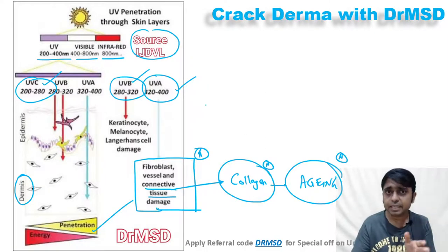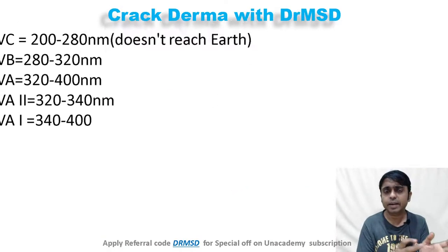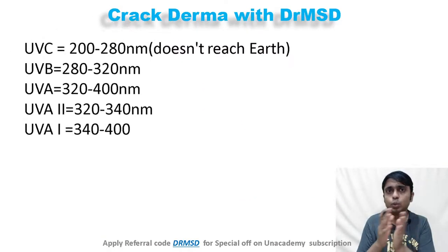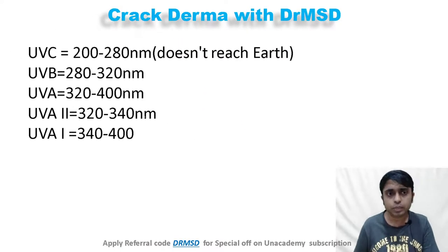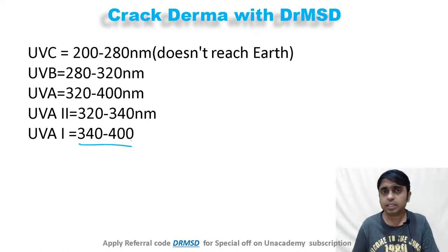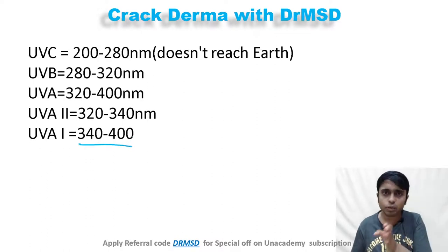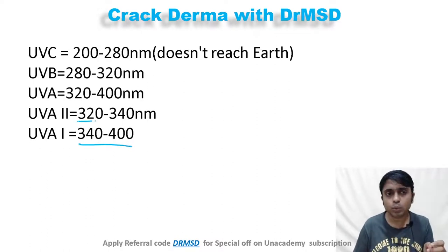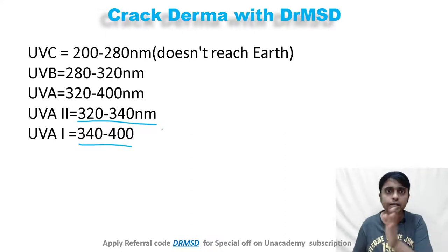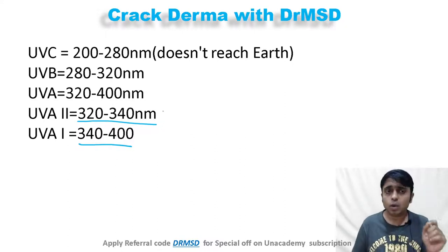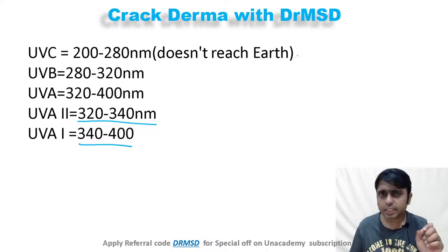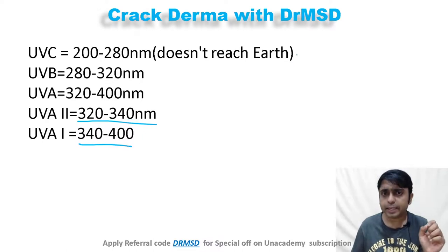UVA rays are also divided into two types: UVA1, which ranges from 340 to 400 nanometers, and UVA2, which ranges from 320 to 340 nanometers.